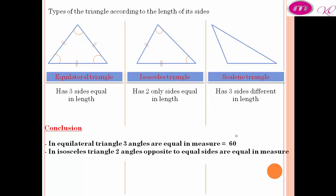In an isosceles triangle, 2 angles opposite to equal sides are equal in measure.